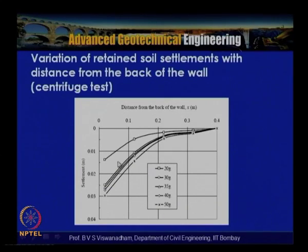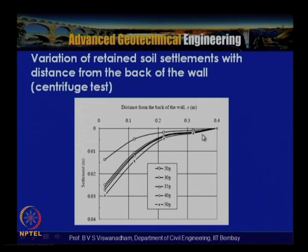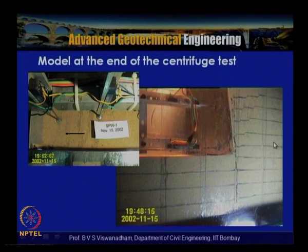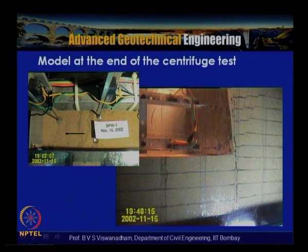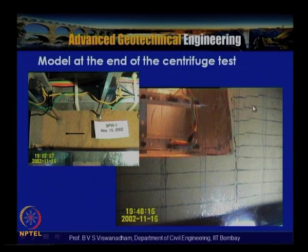The variation of retained soil settlements with distance from the back of the wall shows settlements increasing at 20g, 30g, 35g, 40g, and 50g — both crest settlements and settlements away from the wall crest. From the front elevation, step-type deformations are visible, and a close view shows Rankine rupture planes: one plane passes here, another here, culminating at a particular point.